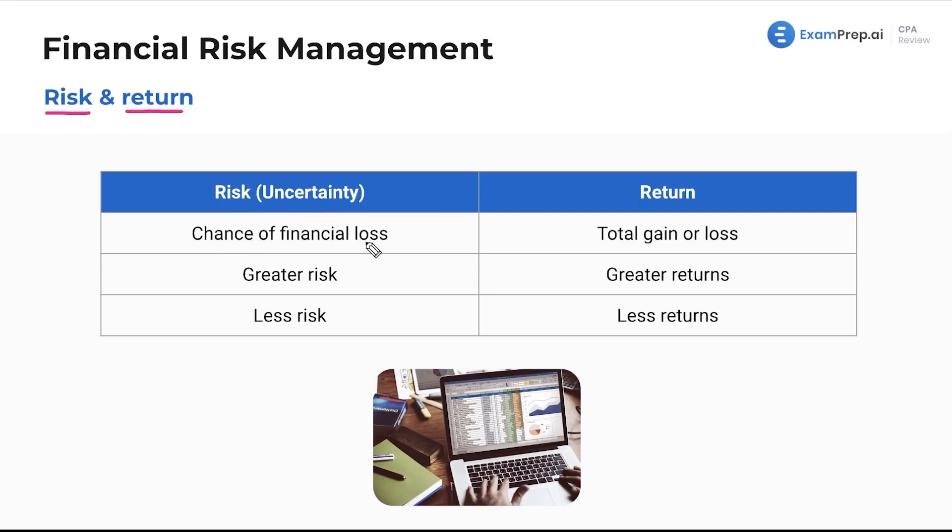It's the chance of financial loss. And even if you know a market is going to go down, you can always short it and use derivatives. We'll talk about that and what that means. So risk really is uncertainty. Uncertainty creates fear. Fear creates financial loss. With greater risk comes greater returns. With less risk comes less returns.